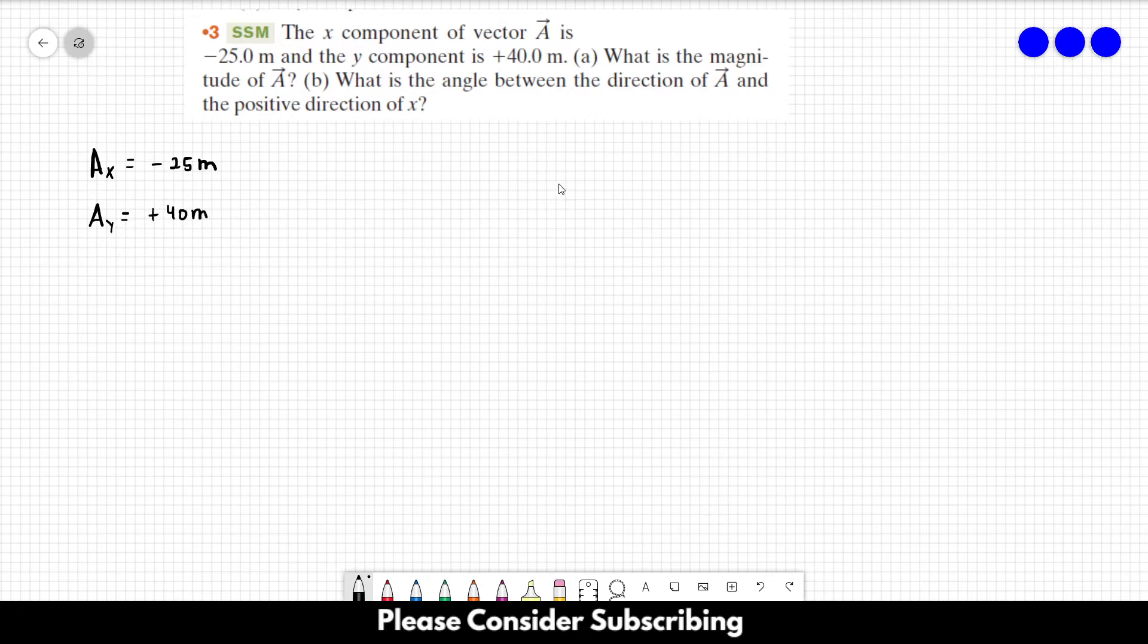Letter A, what is the magnitude of the vector A? So, how can we find the magnitude of a vector in two dimensions? The magnitude of a vector in two dimensions is the square root of the x component squared plus the y component squared.